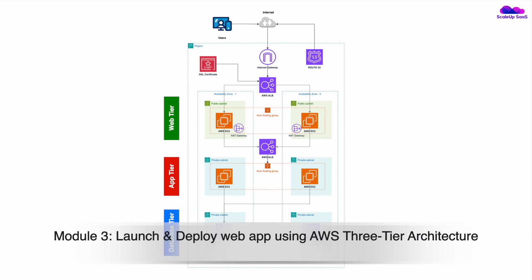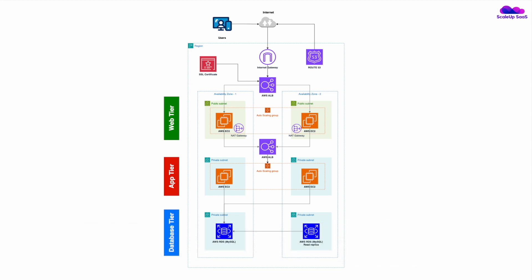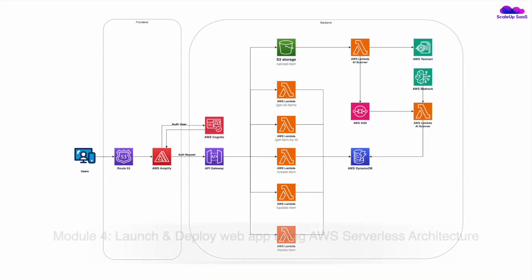In Module 3 we'll learn how to launch and deploy a web app using AWS 3-Tier Architecture. We'll use the same Shopee full-stack application and deploy it using a 3-tier setup with web tier, app tier, and database tier. We'll build everything from scratch — VPC, network, subnets, security groups, RDS, EC2, Elastic Load Balancer — so you'll know how to build a scalable web application with the 3-tier architecture.